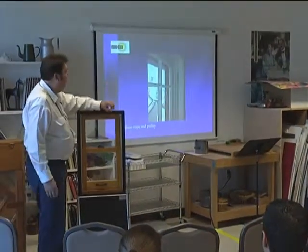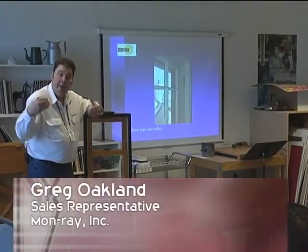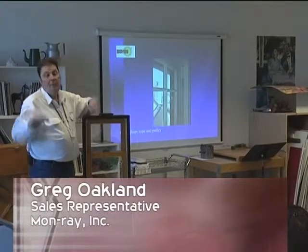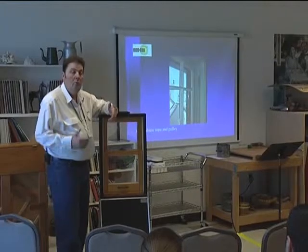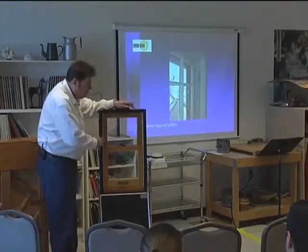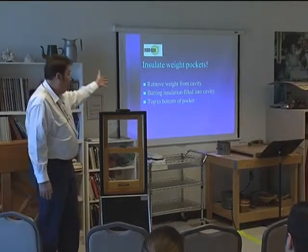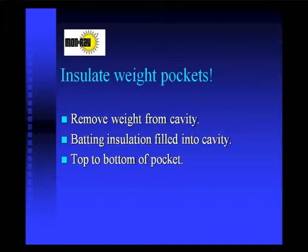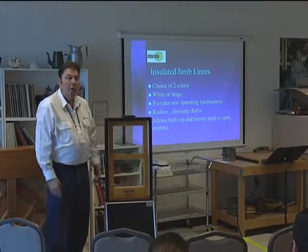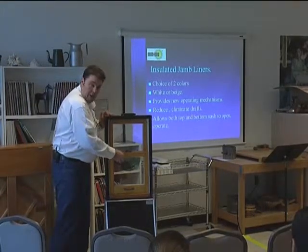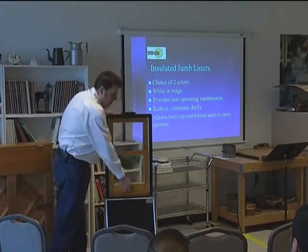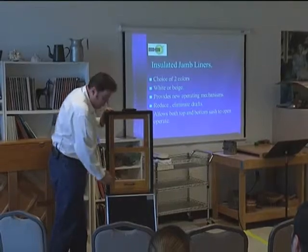Your existing window might have a rope and pulley system or metal slides on the side. We can eliminate those and change it out to a system with a new balance system while the existing sash stays the same. We remove the weights from the cavity and fill it with insulation. If you don't have weights, we take out the metal tracks and insulate behind them, then put in a pressure-tight balance system that adds pressure to the sides of the sash, eliminating side-to-side movement yet leaving it free to move up and down.